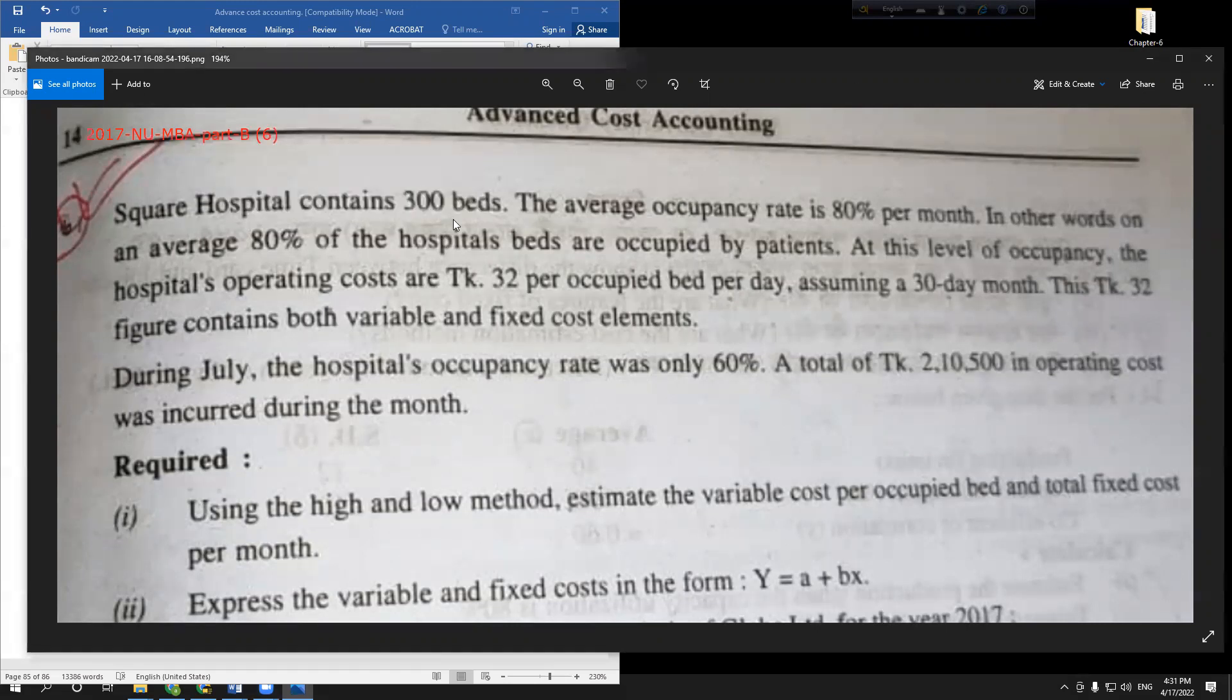Squire Hospital contains 300 beds. The average occupancy rate is 80% per month. In other words, on average 80% of hospital beds are occupied by patients at this level of occupancy.